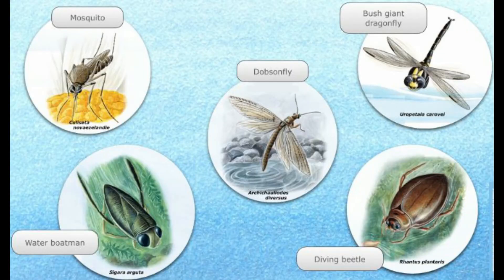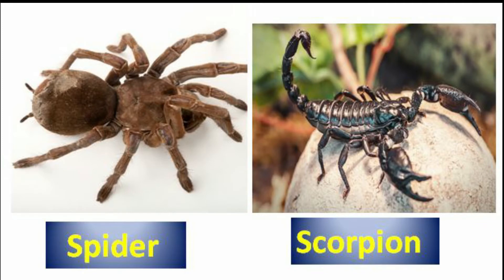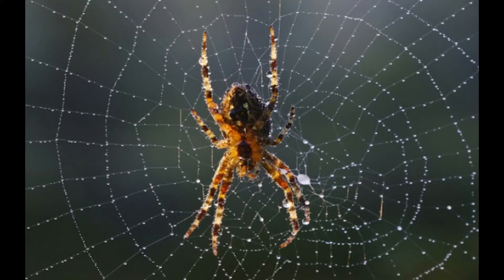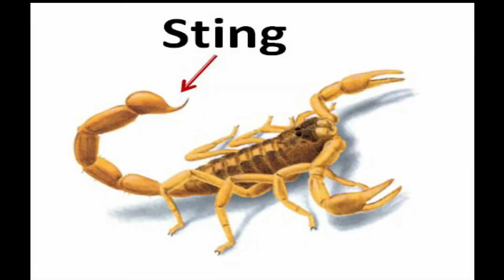Water insects spend a part of their life cycle in water. Mayflies and stoneflies live in or near water. Spiders and scorpions are not insects — they have eight legs. A spider makes a web until its prey gets trapped in it, and may be considered a feared creature. Scorpions have a poisonous sting at the end of their tail and their bite can cause pain.